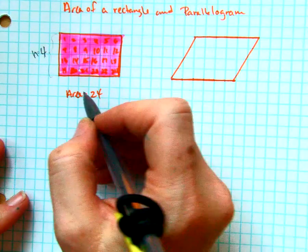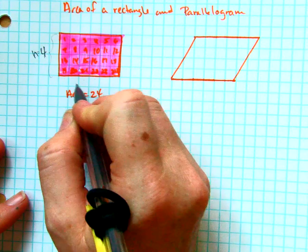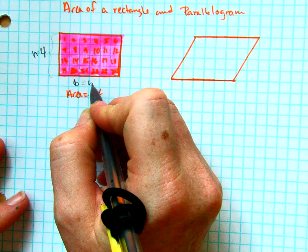And we can do the same thing here for base. One, two, three, four, five, six. So we can say the base of this rectangle is 6.